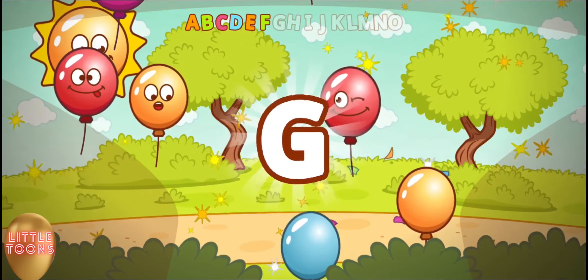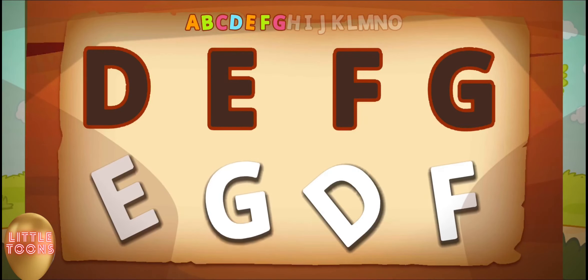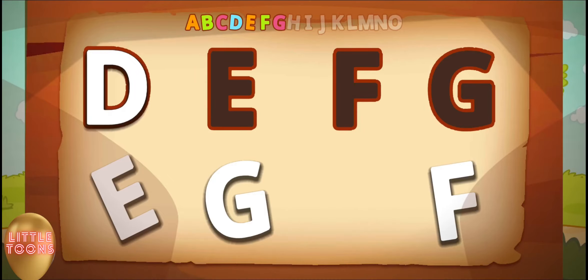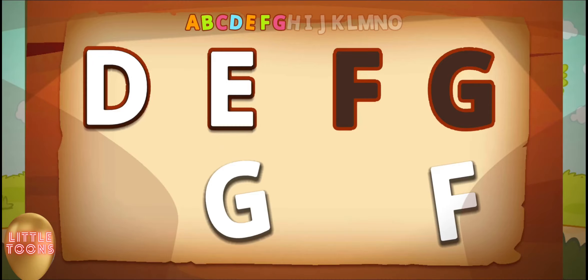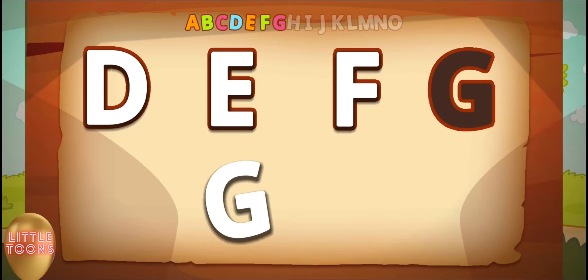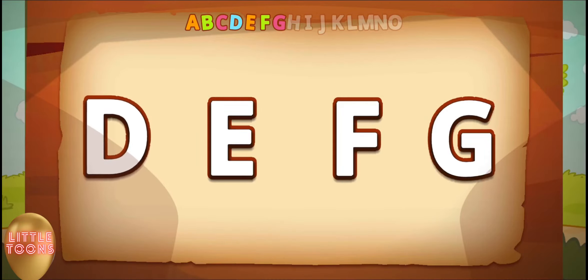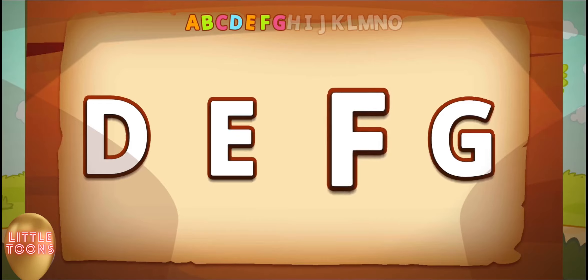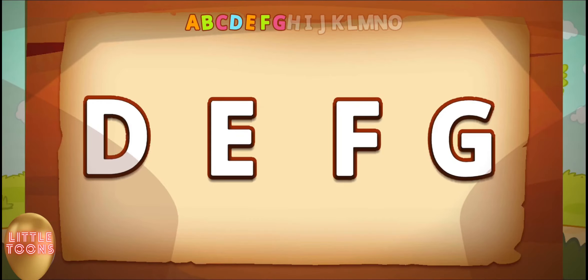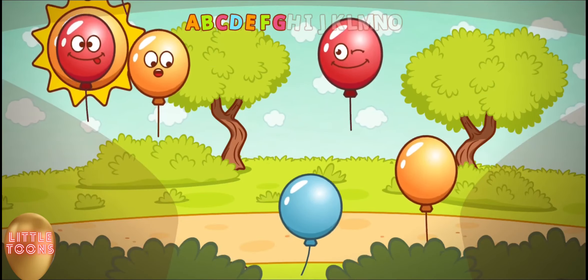G for grapes. Now let's revise — D. What comes after D? E. What comes after E? Yes, it's letter F. Can you guess the last one? It's letter G. D, E, F, G. Let's move on.